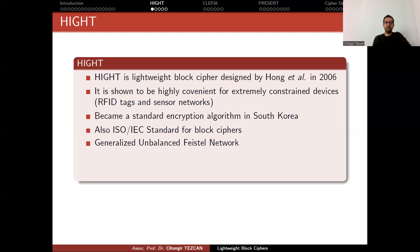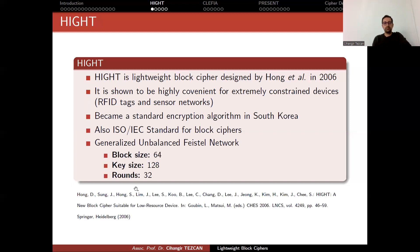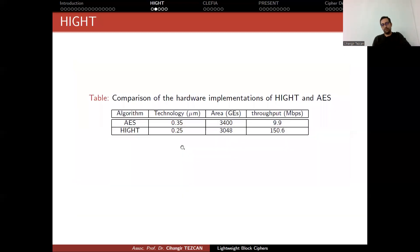This is a generalized unbalanced Feistel network. Block size is 64 bits, key size 128 bits, round number is 32. We talk about Feistel network when we talk about this, but now I'm saying generalized unbalanced. So let's see what this means in the picture.